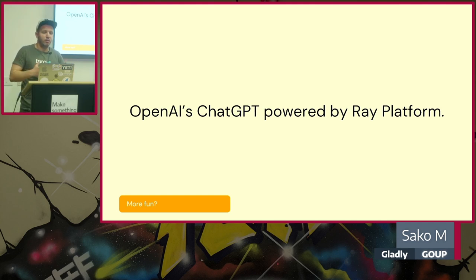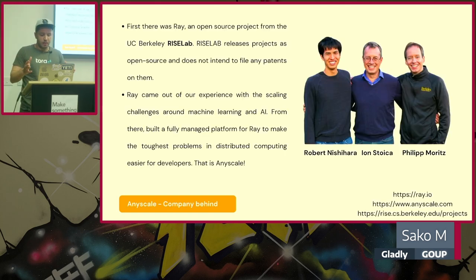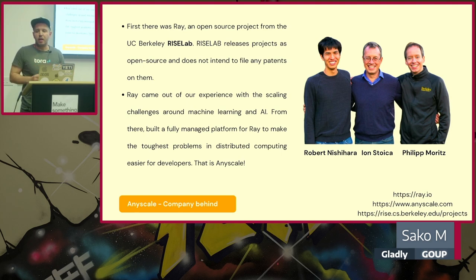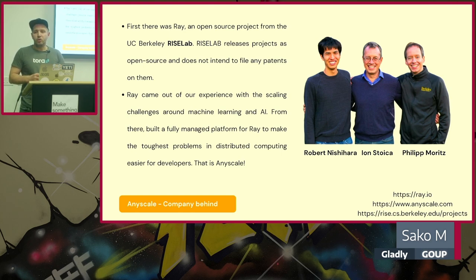I'm not an expert, but I'll share whatever I learned in the past couple of hours. The company behind Ray is now called AnyScale. One of the founders — Ion, who was also a co-founder of Databricks and is a professor at Berkeley, which is a famous place for AI/ML research — and Robert Philip, they were at UC Berkeley where they realized there wasn't really any good tooling around for their research. That's how the Ray project was born.